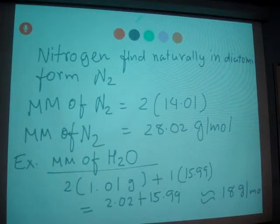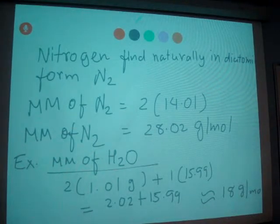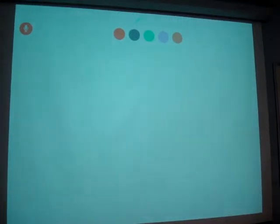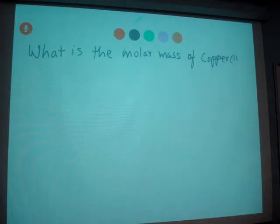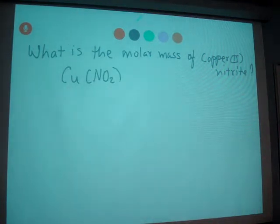Now let's work on a compound that contains a polyatomic ion. We'll take an example of copper(II) nitrite. So let's go to the next slide. We need to find what is the molar mass of copper(II) nitrite. What's the copper(II) nitrite formula? Cu(NO2)2.